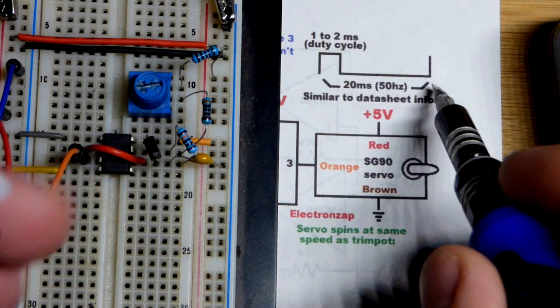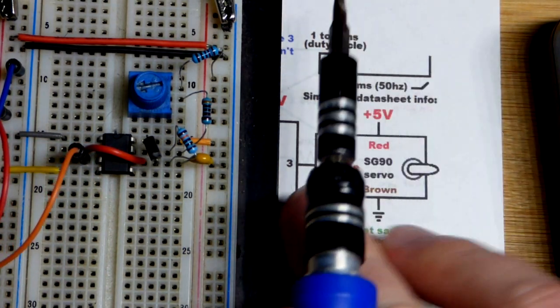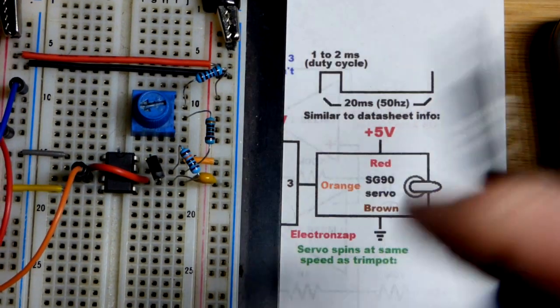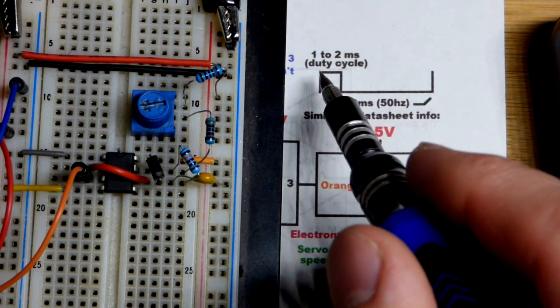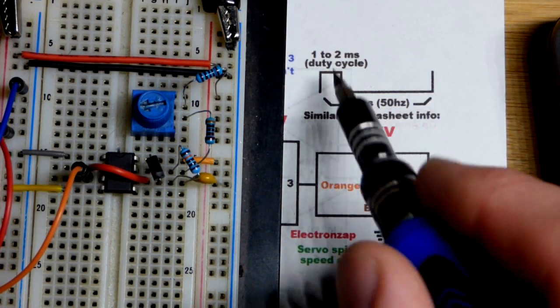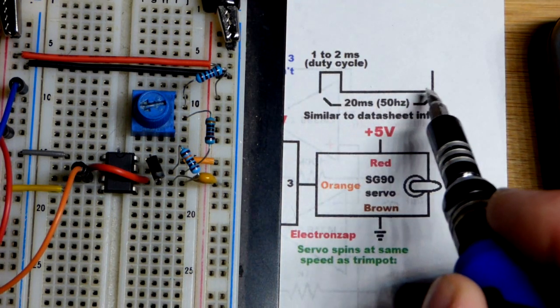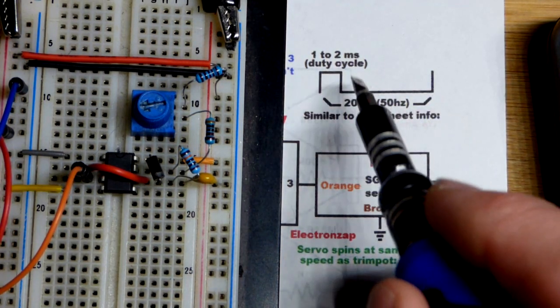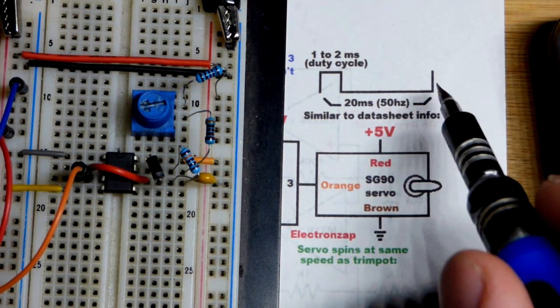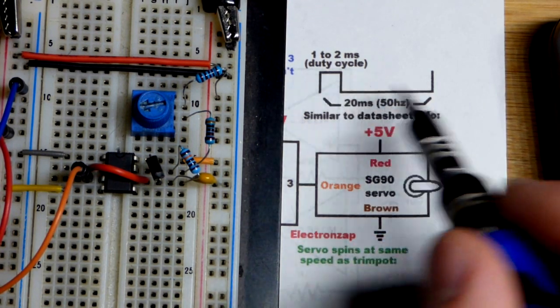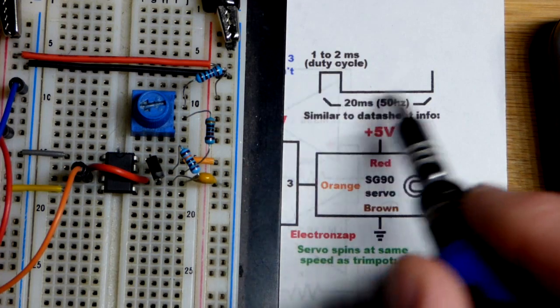We want approximately a cycle to be about 20 milliseconds. So that means if we start right when it's high and then count the time that it is low before it goes high again, that's a cycle right there.